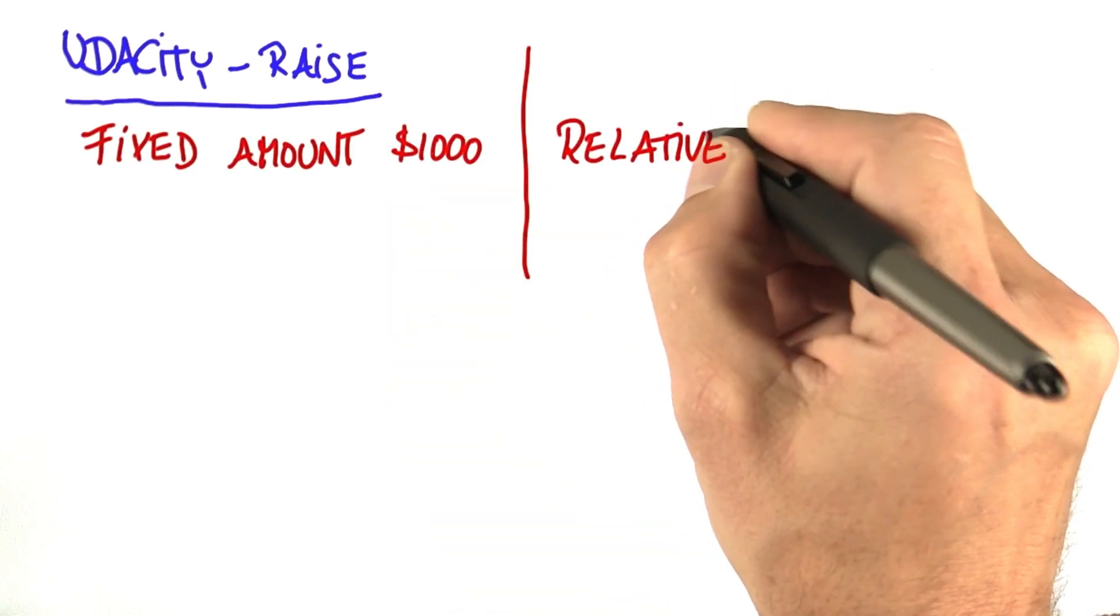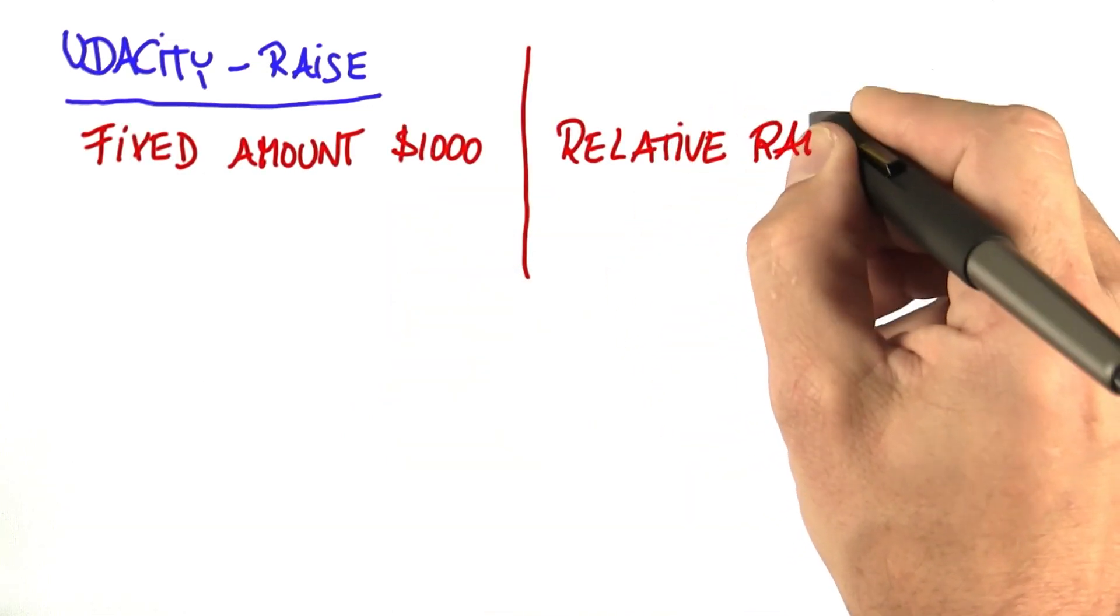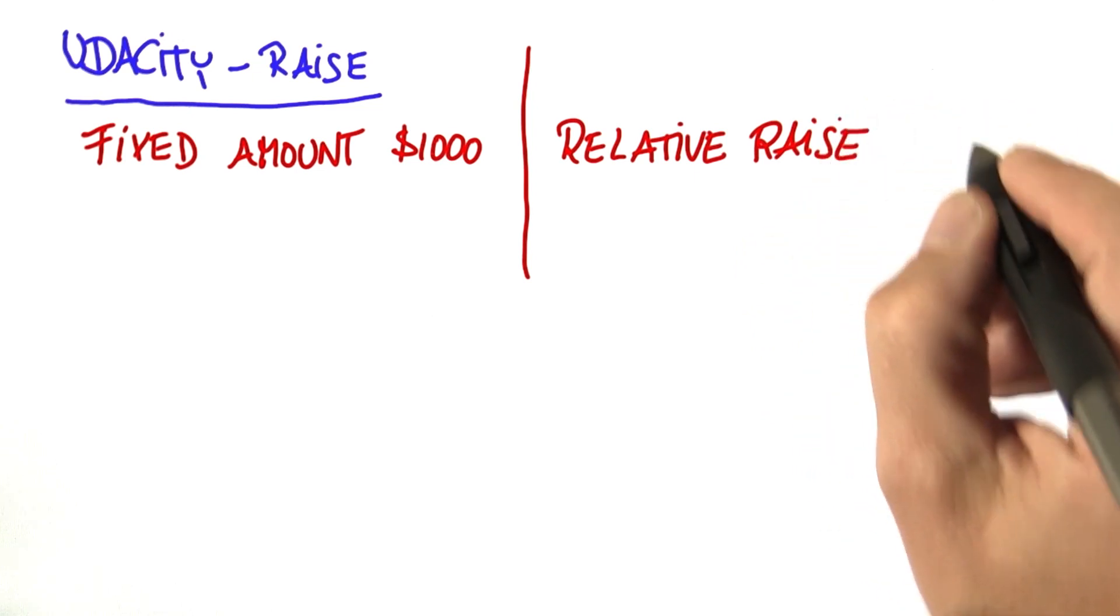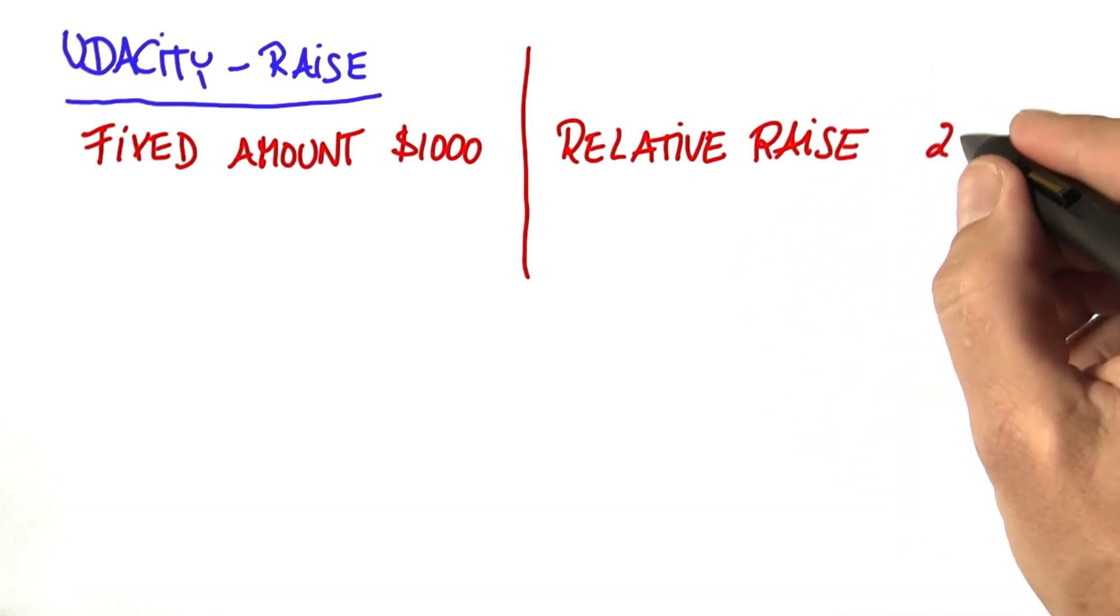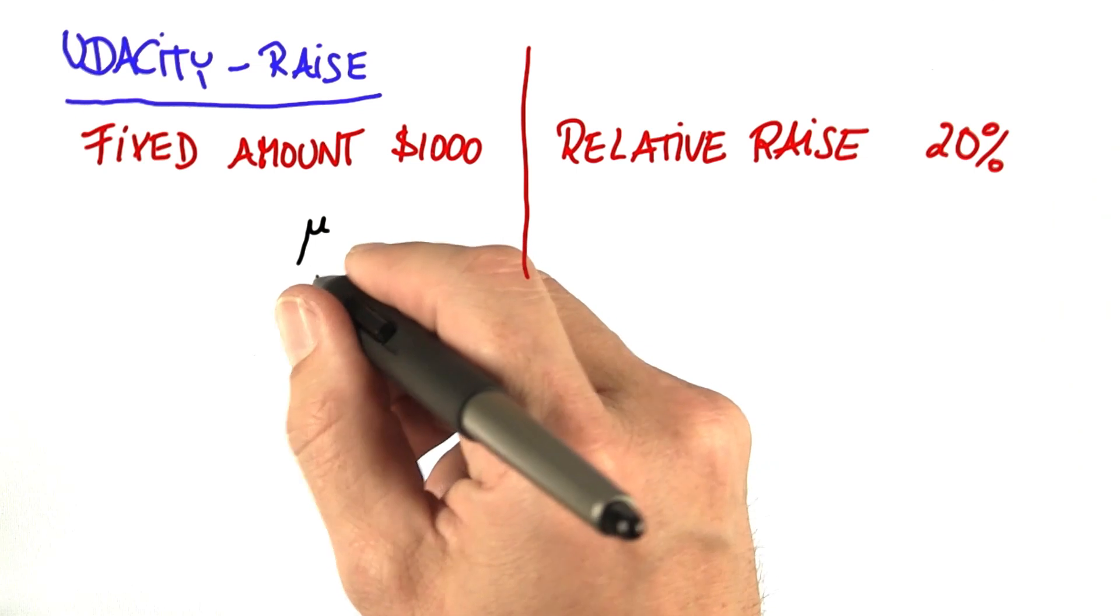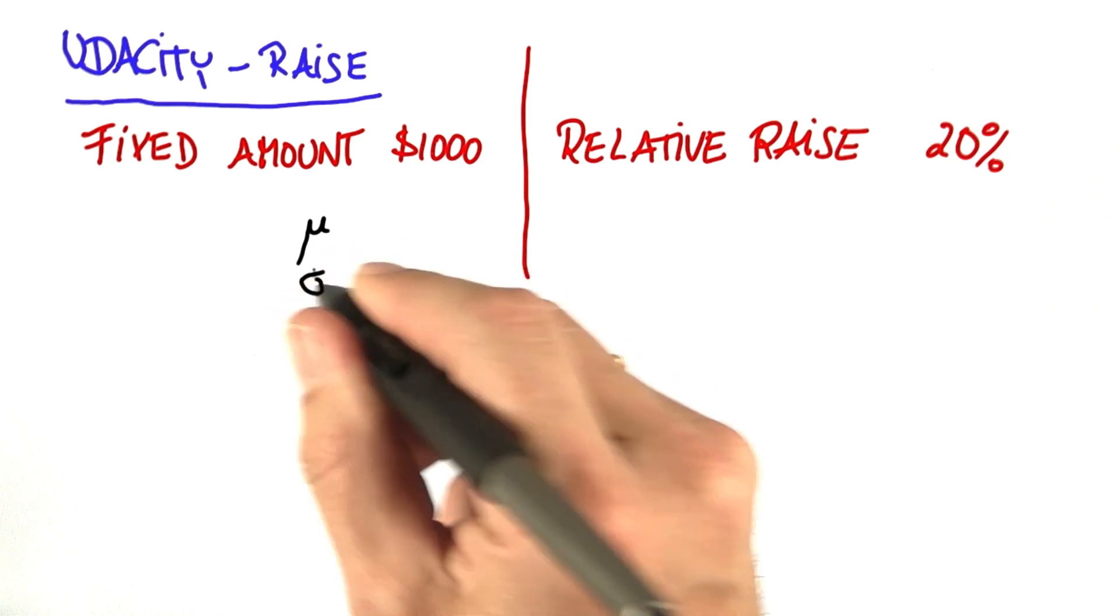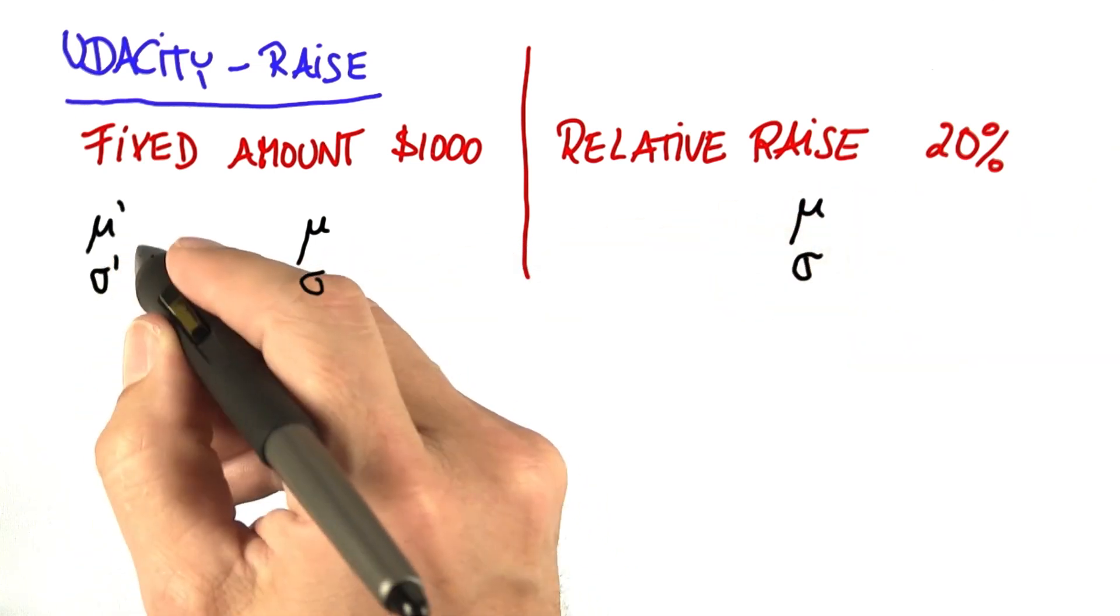I'm considering two types of raises: a fixed amount of $1,000 and what's called a relative raise of 20%. Now that changes the mean and or the standard deviation to potentially different values.